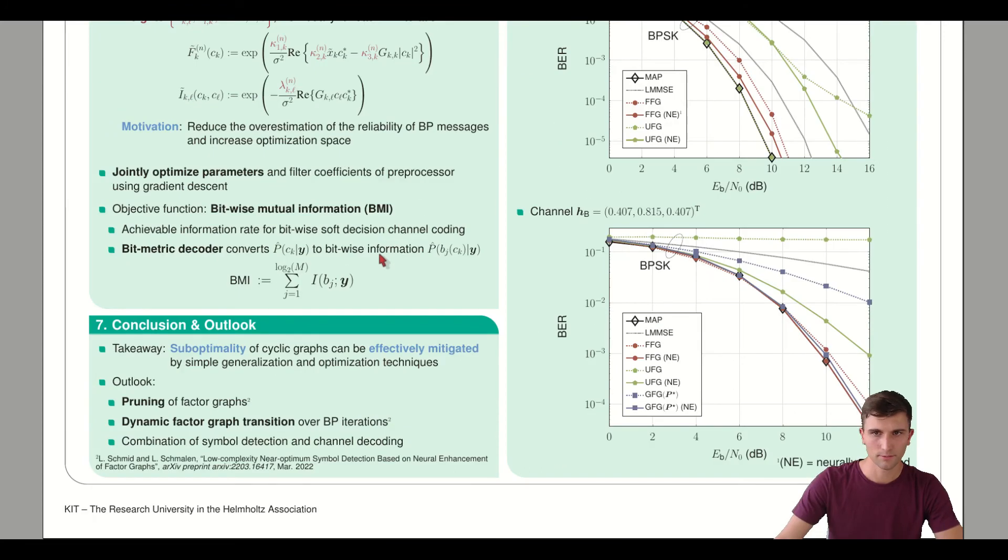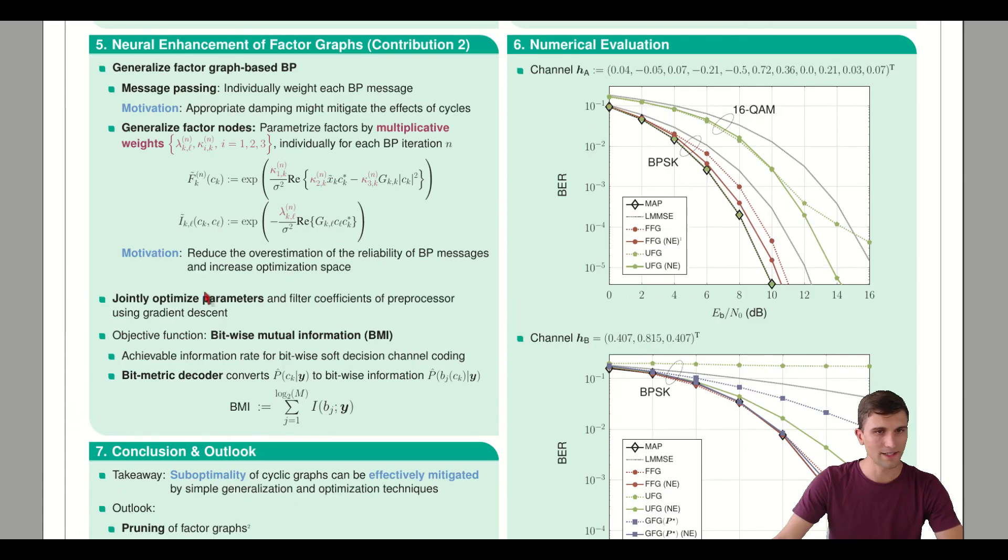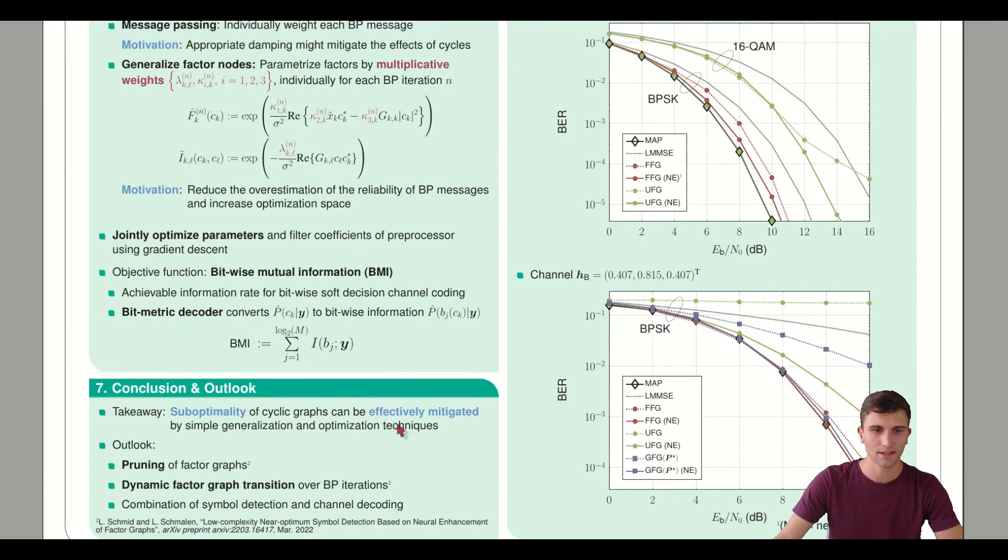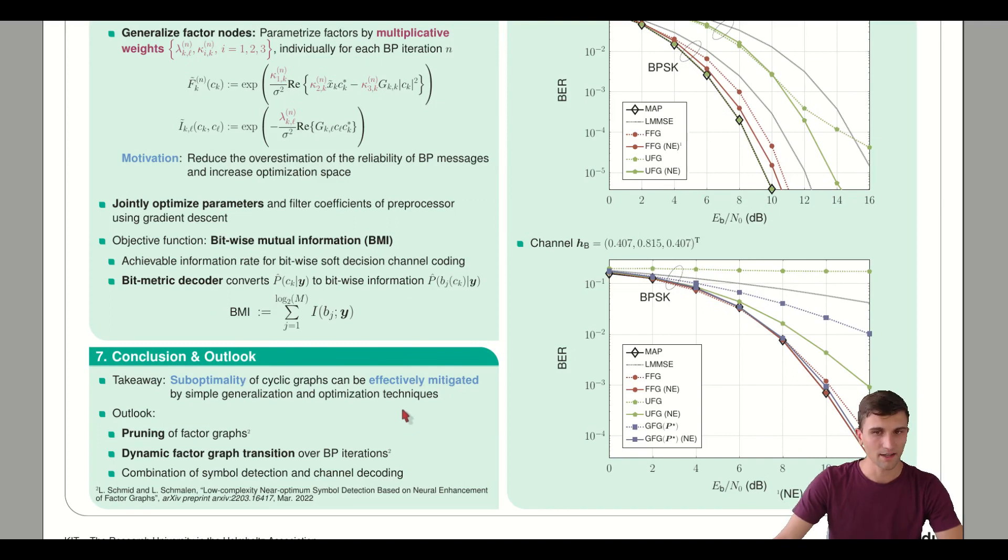This brings us to the end. As a takeaway, we can mitigate the sub-optimality of cyclic factor graphs and belief propagation by using quite simple generalizations on the factor nodes and message passing, and thereby improve the performance quite drastically.